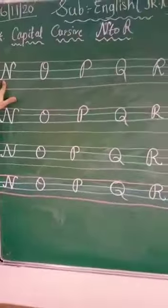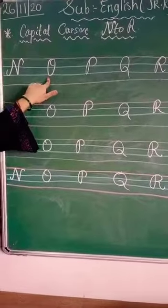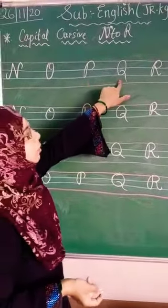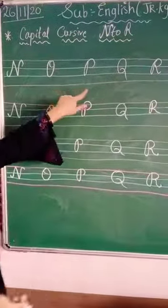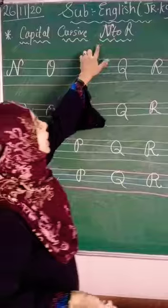Capital N, Capital O, Capital P, Capital Q, and capital R. These all are capital cursive from N to R.